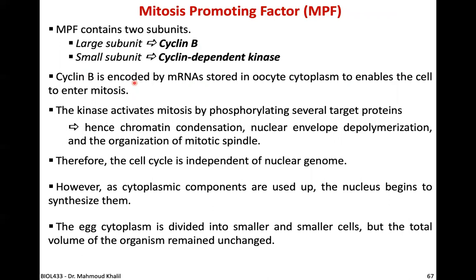As cytoplasmic components are used up during cleavage, the nucleus begins to transcribe again. The egg cytoplasm is initially full of stored messenger RNAs, which are translated into proteins needed by the blastomeres during cleavage. Once these are used up, the nucleus resumes transcription. The egg cytoplasm is divided into smaller and smaller cells, but the total volume of the organism remains unchanged.